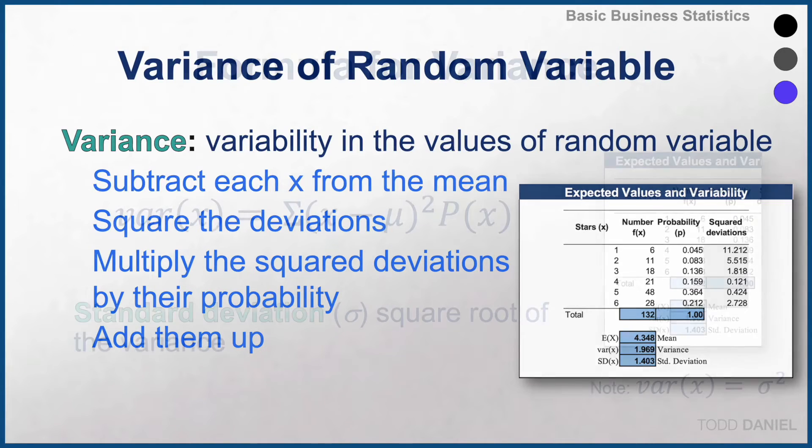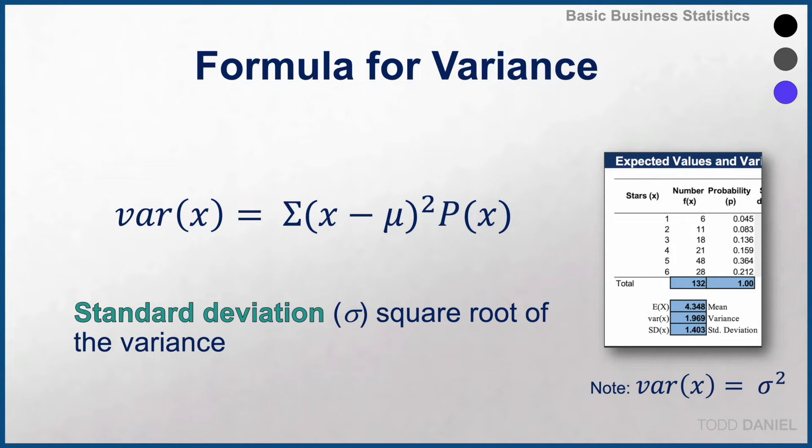And here's the formula for variance. The variance is the sum of (x minus the mean) squared times the probability of x. And the standard deviation, as it always is, is the square root of the variance.